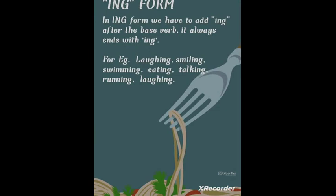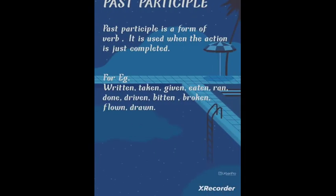The ING form is also very simple — we add the word 'ing' to the base form. For example: laughing, smiling, eating, talking. The ING form tells us that the action is still going on. She is laughing, he is running, I am talking, we are eating, they are swimming, you are laughing, she is smiling. This is the ING form of the verb, which expresses that the action is still ongoing. Write two examples in the comment box.